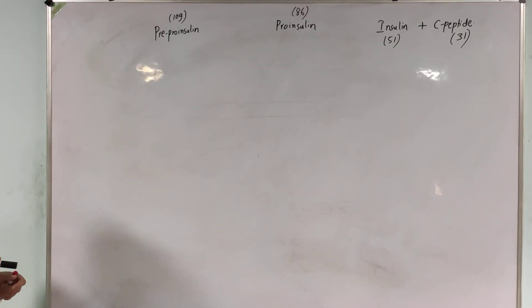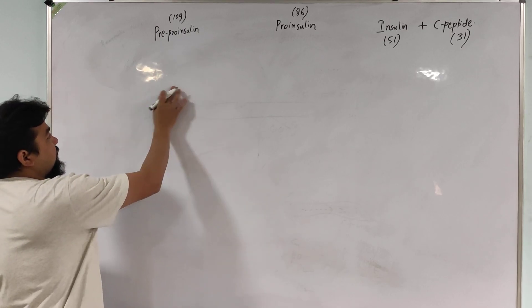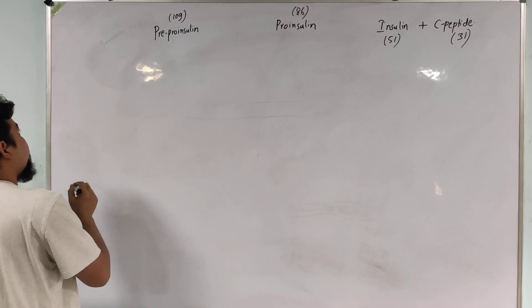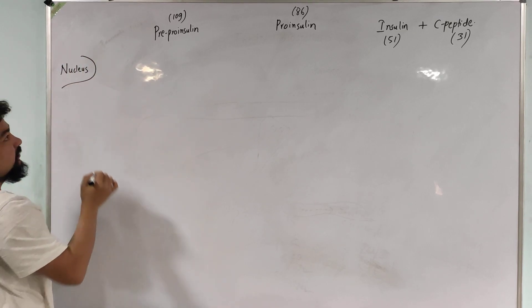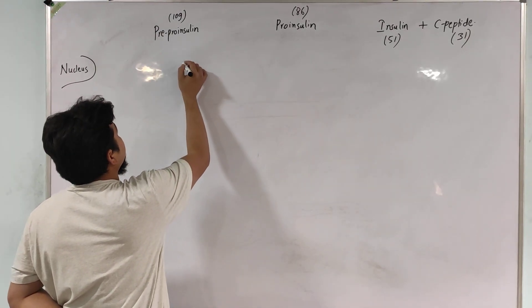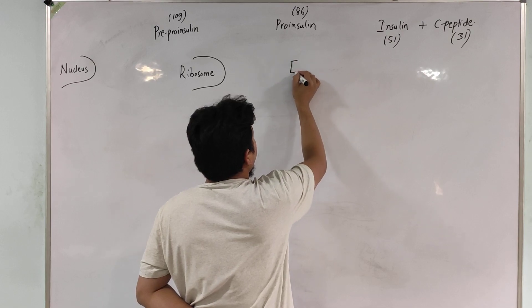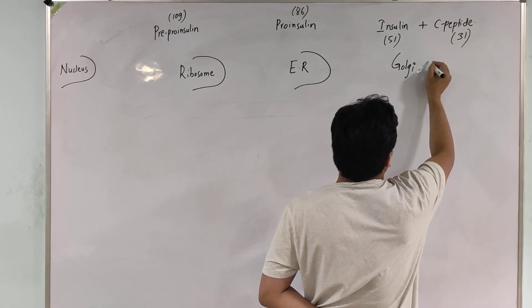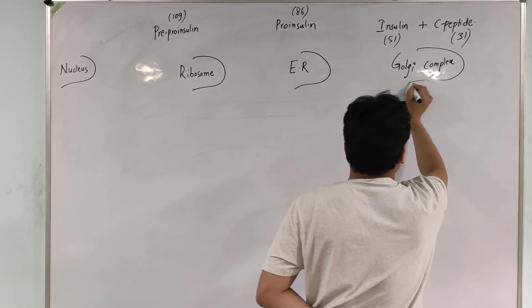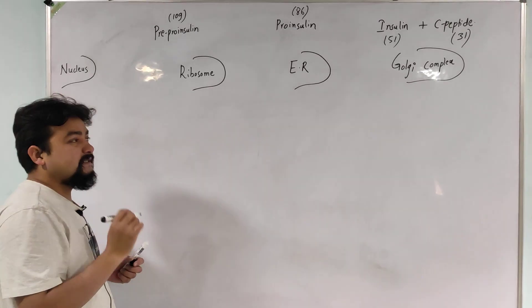As we already know, beta cells are responsible for the production of insulin. The following cell organelles in beta cells play a very important role in insulin production: first, the nucleus; second, the ribosome; third, the endoplasmic reticulum; and finally, the Golgi complex or apparatus. These four cell organelles inside the pancreatic beta cell play a very important role in synthesizing insulin.